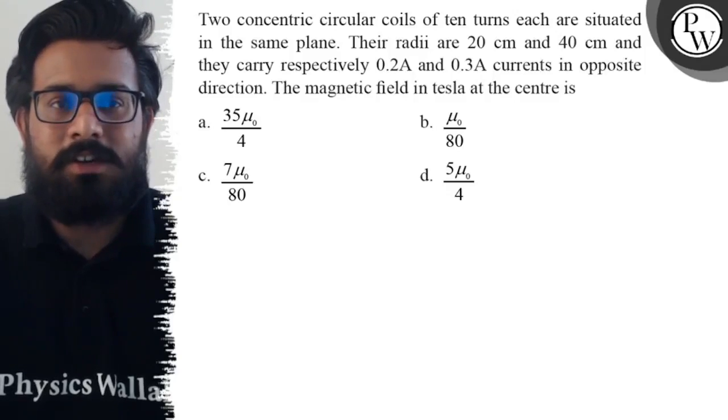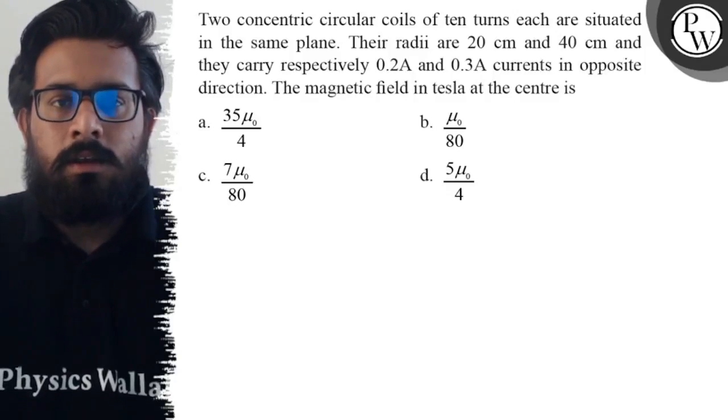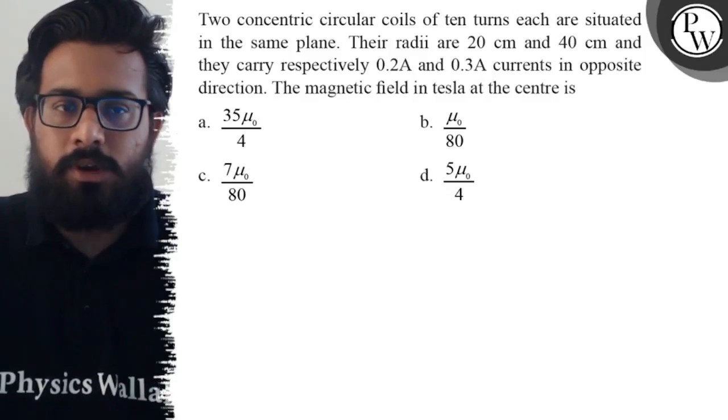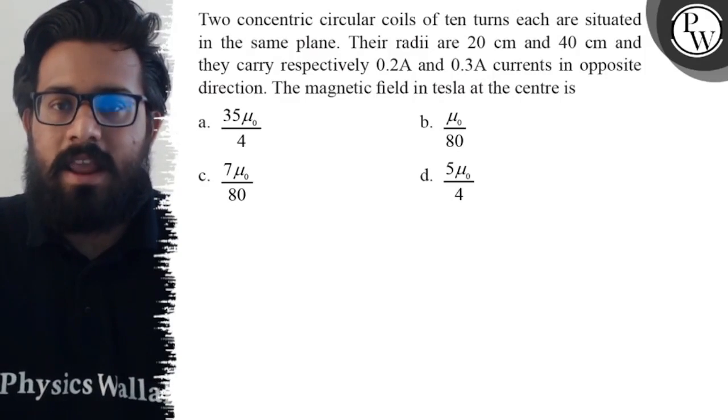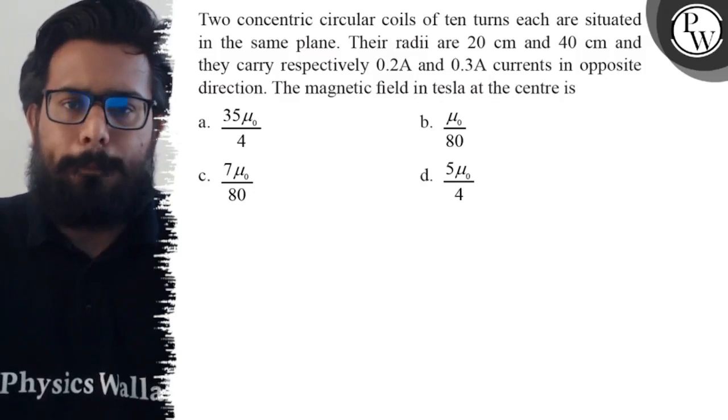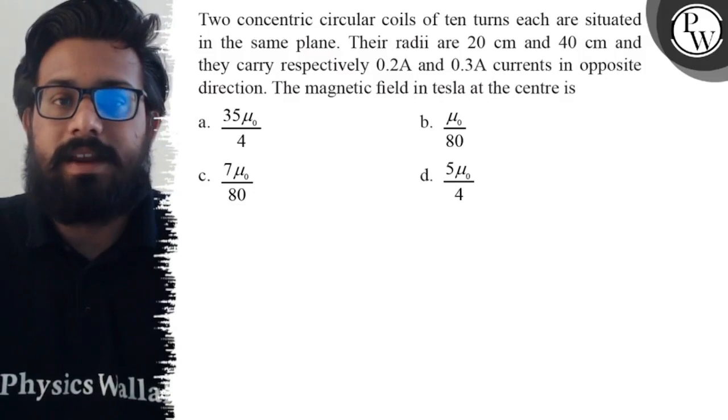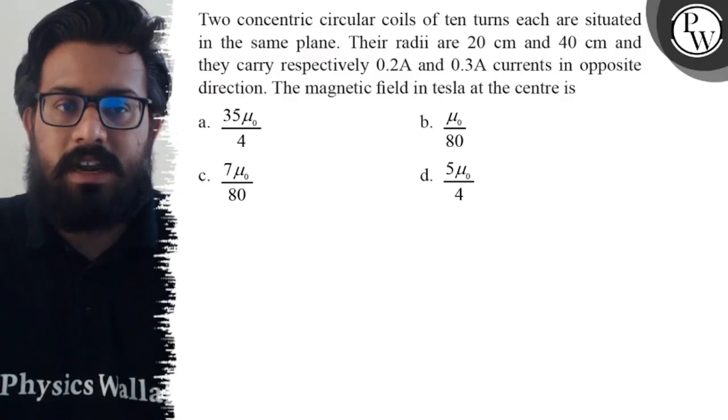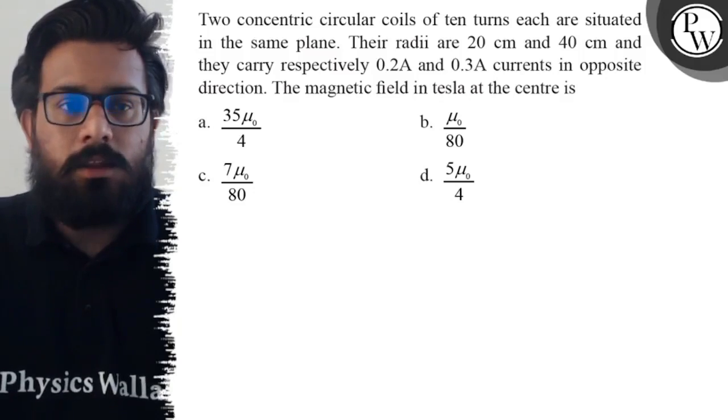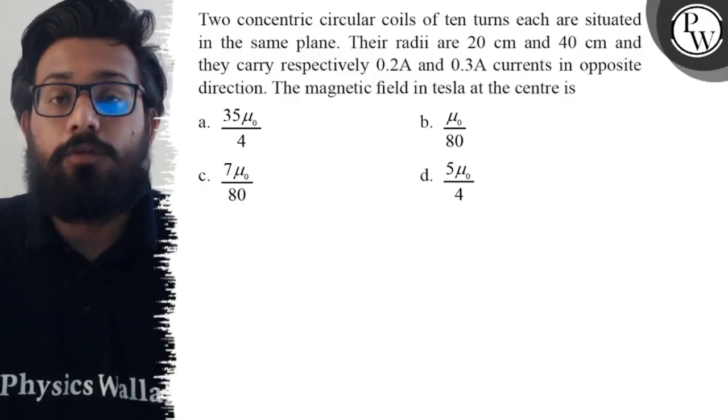Hello students, let's see the question. Two concentric circular coils of ten turns each are situated in the same plane. Their radii are 20 centimeter and 40 centimeter, and they carry respectively 0.2 ampere and 0.3 ampere current in opposite direction. The magnetic field in Tesla at the center is: first option is 35μ₀/4, second option is μ₀/80, third option is 7μ₀/80, and the fourth option is 5μ₀/4.